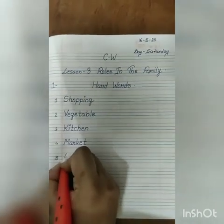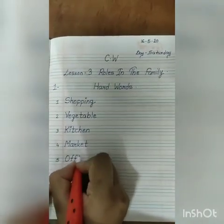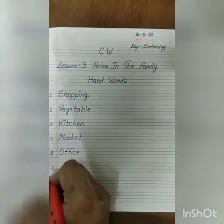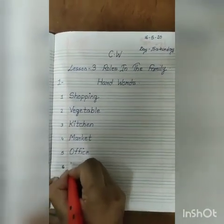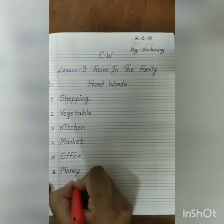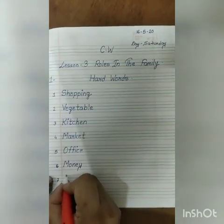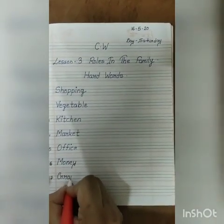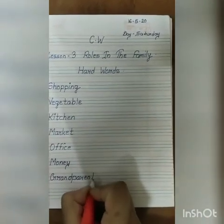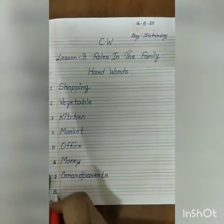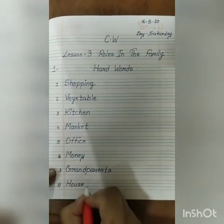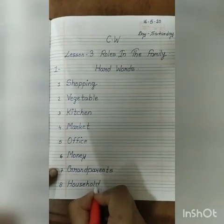Number five: office — O-F-F-I-C-E. Number six: money — M-O-N-E-Y. Number seven: grandparents — G-R-A-N-D-P-A-R-E-N-T-S. Number eight: household — H-O-U-S-E-H-O-L-D.